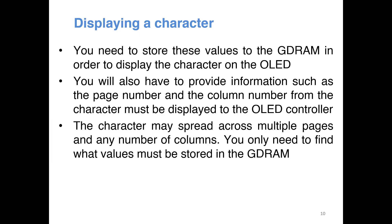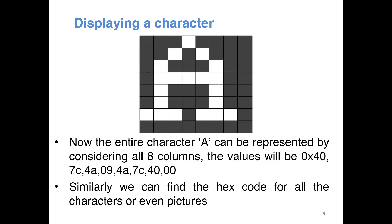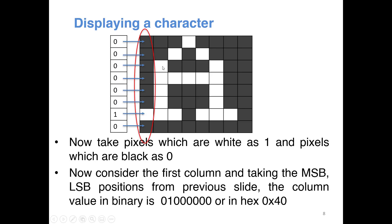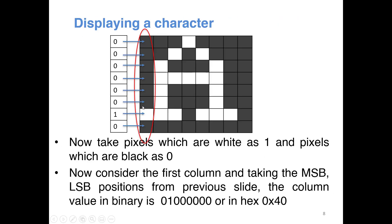You need to find the bitmap for all characters — and not only characters; if you are trying to display a picture, you have to find the corresponding bitmap for each pixel. When storing it in the GDDRAM, the bottom pixel is the LSB and the top is the MSB. You must do it column-wise here, not row-wise, because some other displays use row-wise ordering but this one is column-wise.